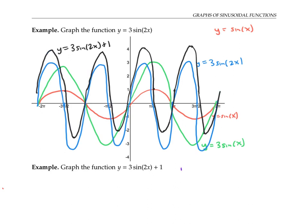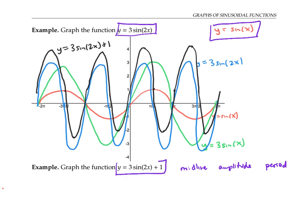Let's compare the midline, amplitude, and period of our original y equals sine x, our transformed y equals three sine of two x, and our further transformed y equals three sine of two x plus one. The original sine has a midline at y equals zero, an amplitude of one, and a period of two pi.